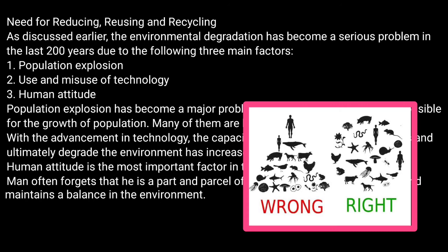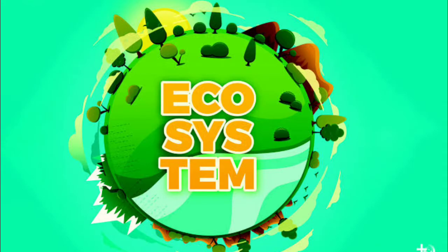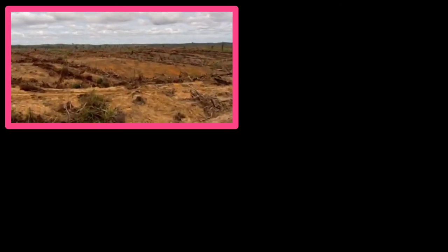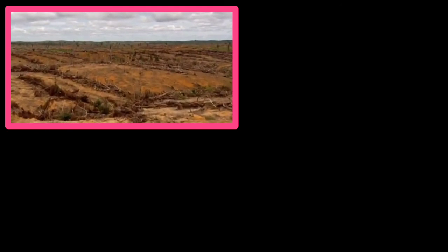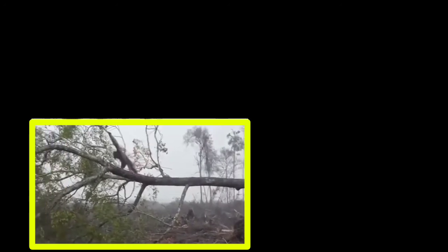Another important factor is human attitude. Man often forgets that he is part and parcel of the ecosystem — not at the top of it. The ecosystem is a very fragile and delicate system; if even one link is missing, the whole ecosystem is going to collapse. But in the name of construction, we are destroying nature and degrading the environment.